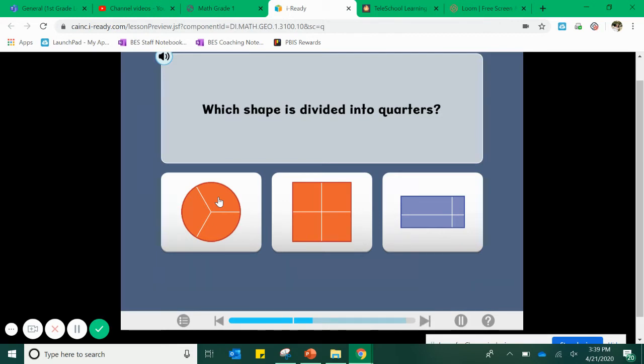Right now we're talking about quarters. So I want four equal parts. Well, my square is broken into four parts. Okay. Four parts, fourths, quarters. And my rectangle is also broken up into four parts. One, two, three, four.